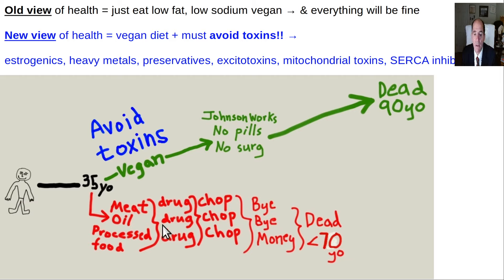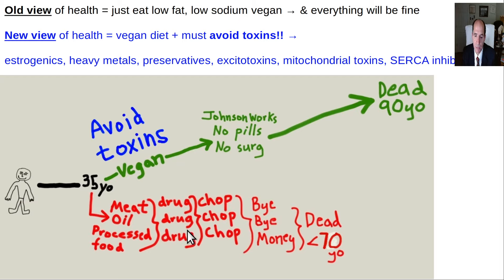On the other hand, a typical American is fat by their late 30s or early 40s, getting fatter and sicker by their 50s — hypertensive, diabetic, pre-diabetic, taking multiple pills. The drugs don't work well because it's a dietary disease. The only way to cure a dietary disease is to fix the diet.